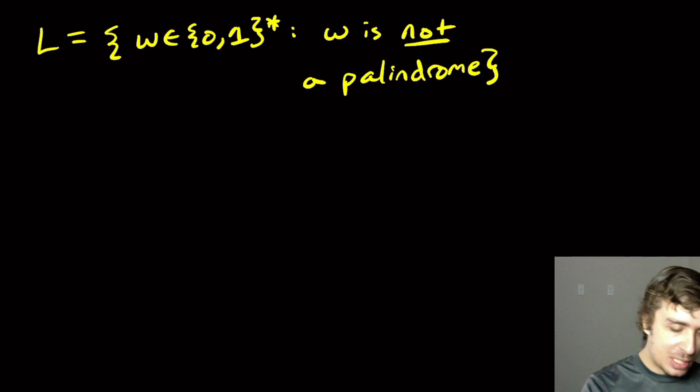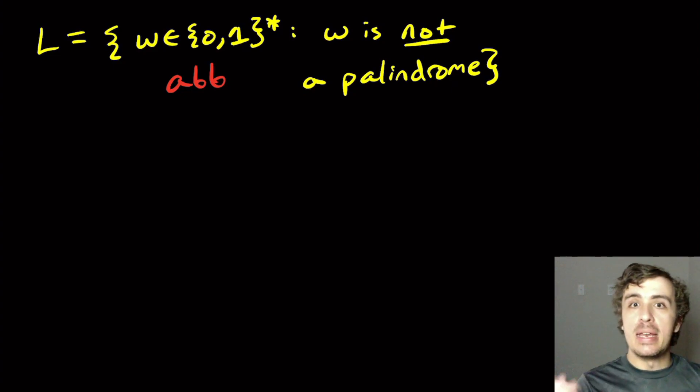So as an example, ABBA, that is a palindrome, so it's not in L. But if I take away one of those characters, let's say that one, then it is in the language L here.